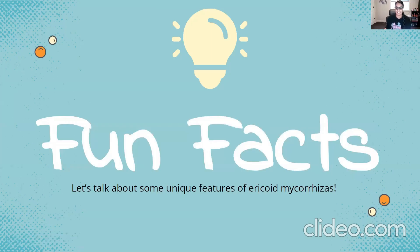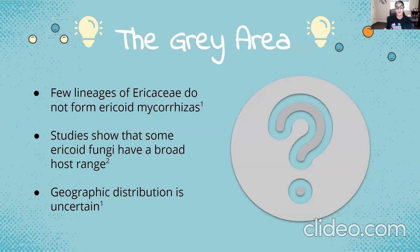On to our fun facts section — let's talk about some unique features of ericoid mycorrhizals. Our first fun fact pertains to the idea that there's not always a right or wrong in science; we have a gray area, and this is exciting especially for undergraduate science students. Some studies have shown that fungal communities colonizing ericoid roots can lack specificity for different species of ericoid plants, suggesting that at least some of these fungi have a broad host range. A few lineages within the Ericaceae do not form ericoid mycorrhiza and instead form other types of mycorrhizals, so maybe this interaction is not limited to just ericoid plant species.